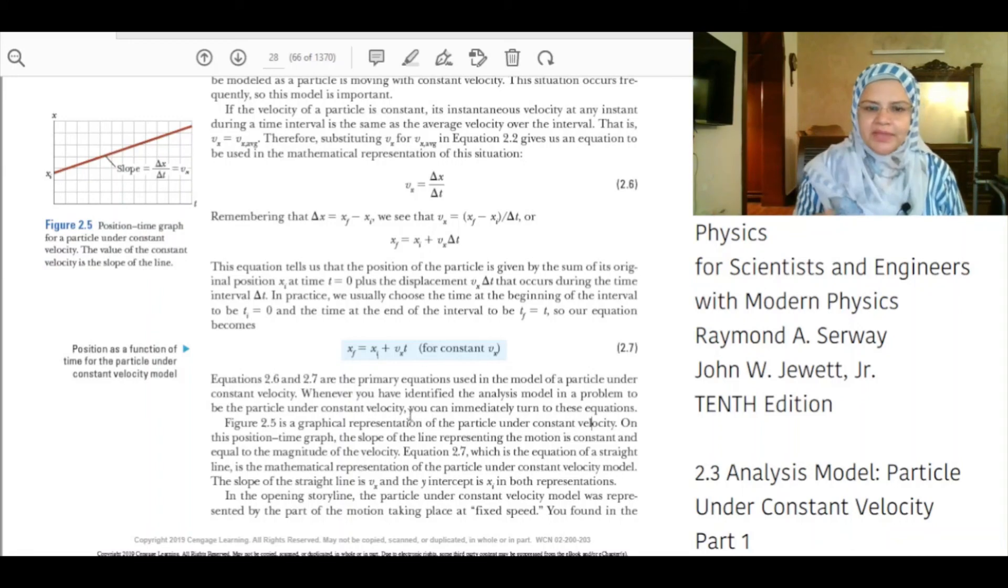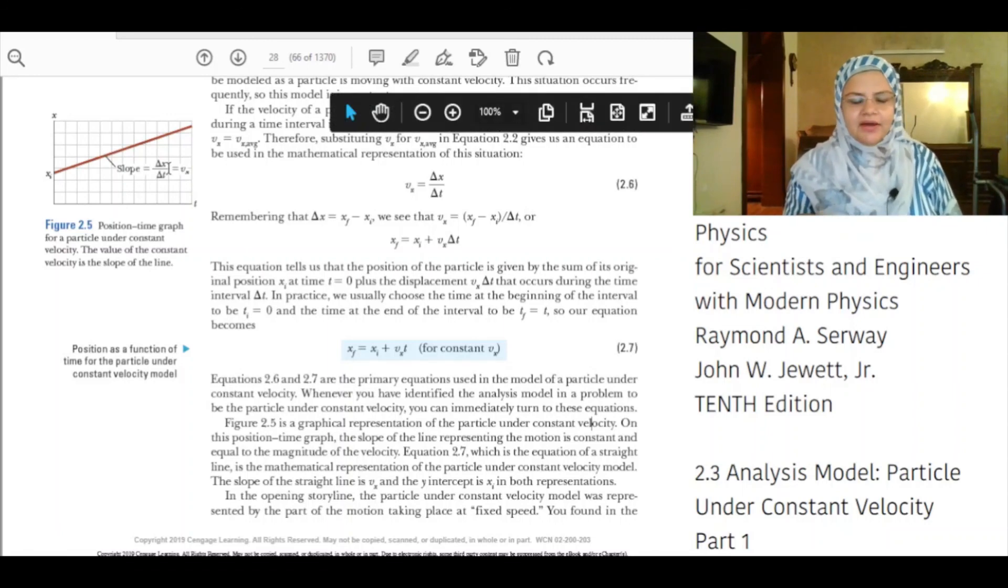Simply revising what we have learned: xf, which is the final displacement, is equal to xi plus Vx t. xi is the initial displacement and Vx t is the displacement during the time interval t if Vx is constant. Therefore, xf is equal to xi plus Vx t. If we look at the graph, we see that the slope of the graph is equal to constant velocity, which is equal to Vx, and the y-intercept will give us xi, which was the initial displacement.